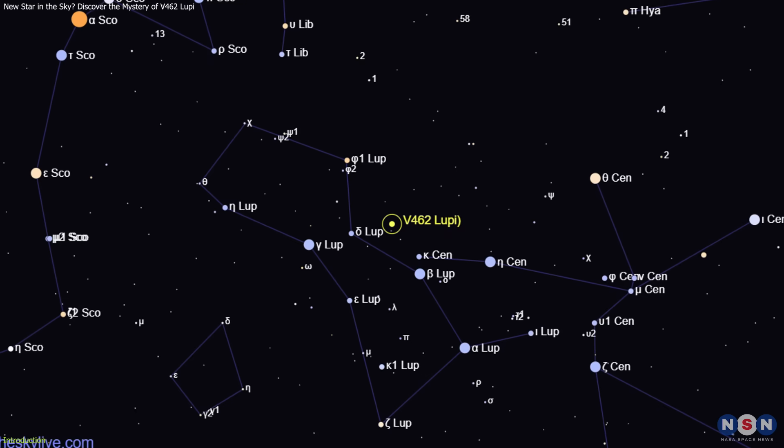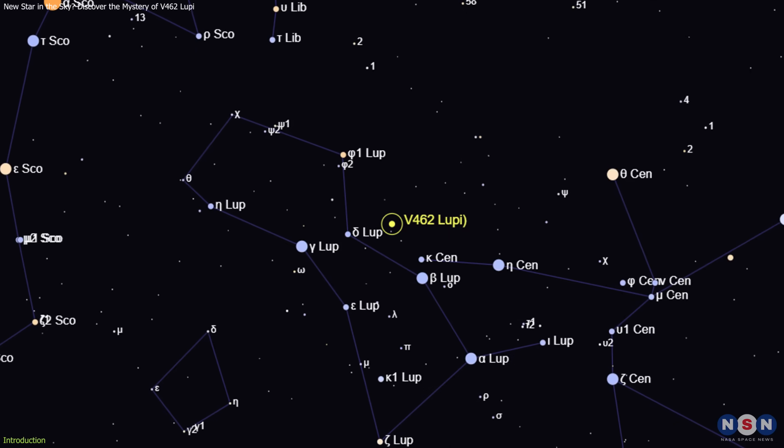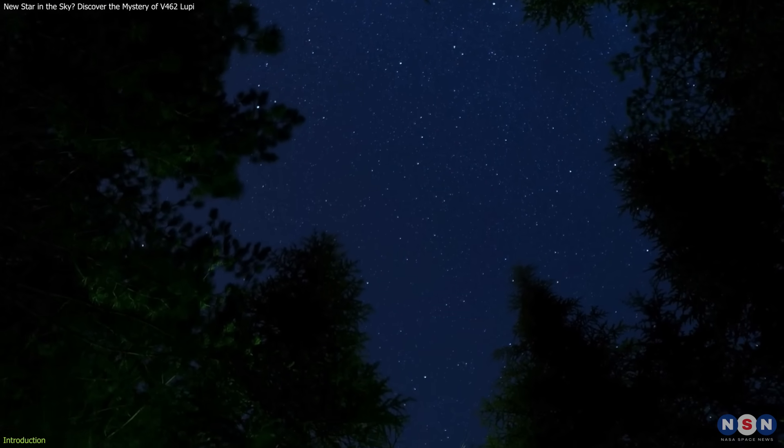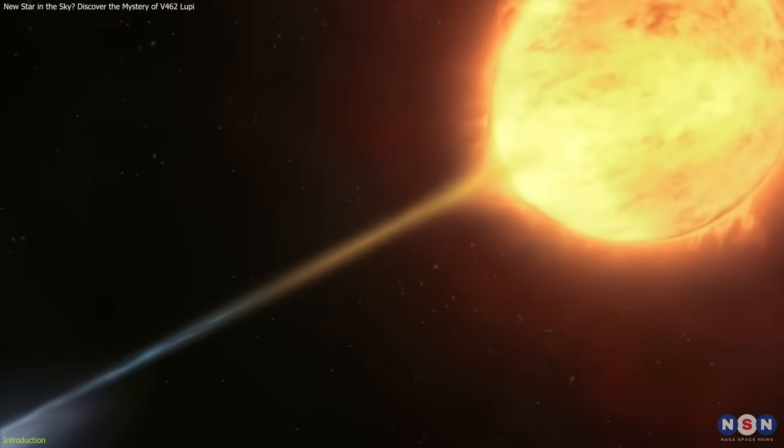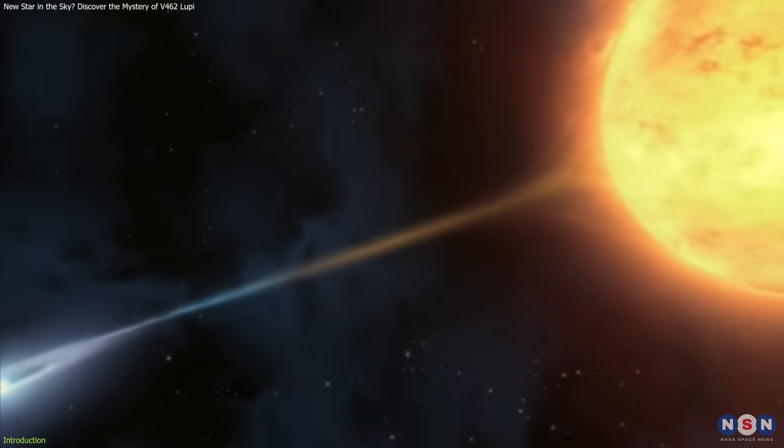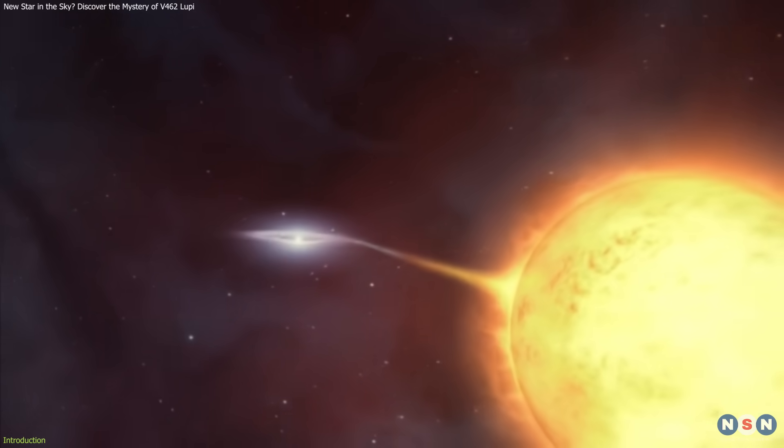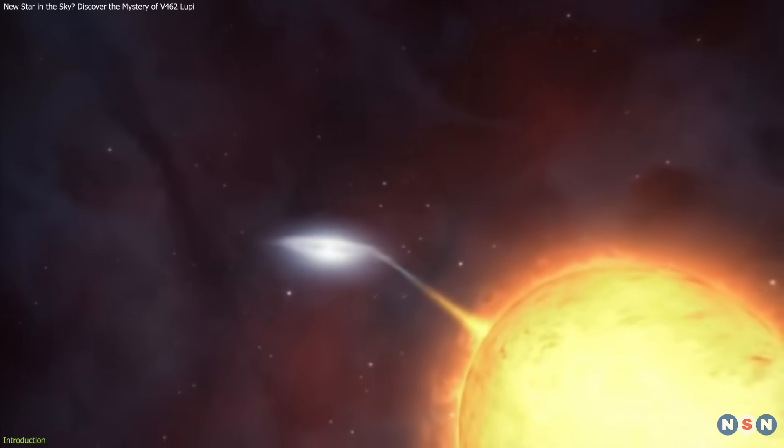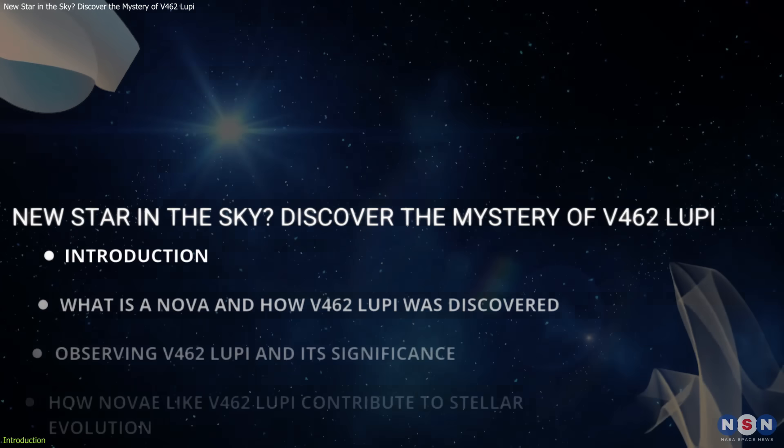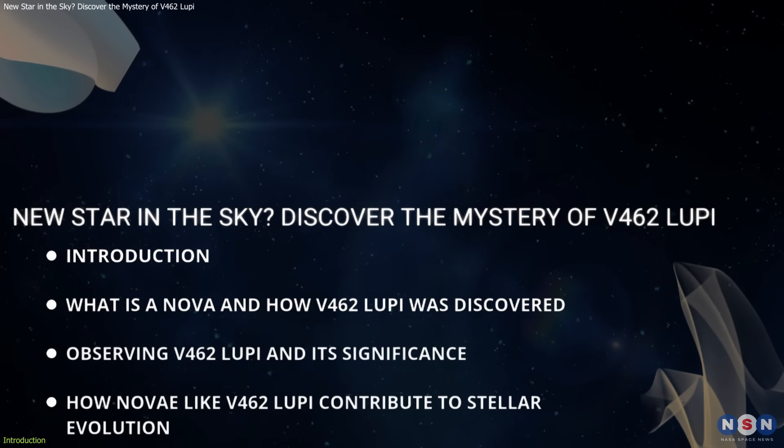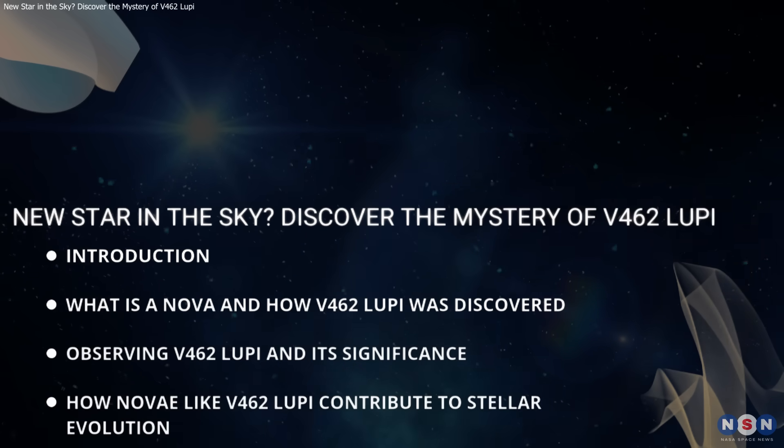V462 Lupe is a classical nova located in the Lupus constellation. Initially faint, it has since brightened significantly, making it visible in dark sky conditions. This stellar event provides a rare opportunity to witness the explosive nature of a white dwarf as it rapidly accretes material from its companion star, causing a sudden burst of brightness. Let's take a closer look at what makes V462 Lupe special and why it's grabbing the attention of both astronomers and sky watchers alike.